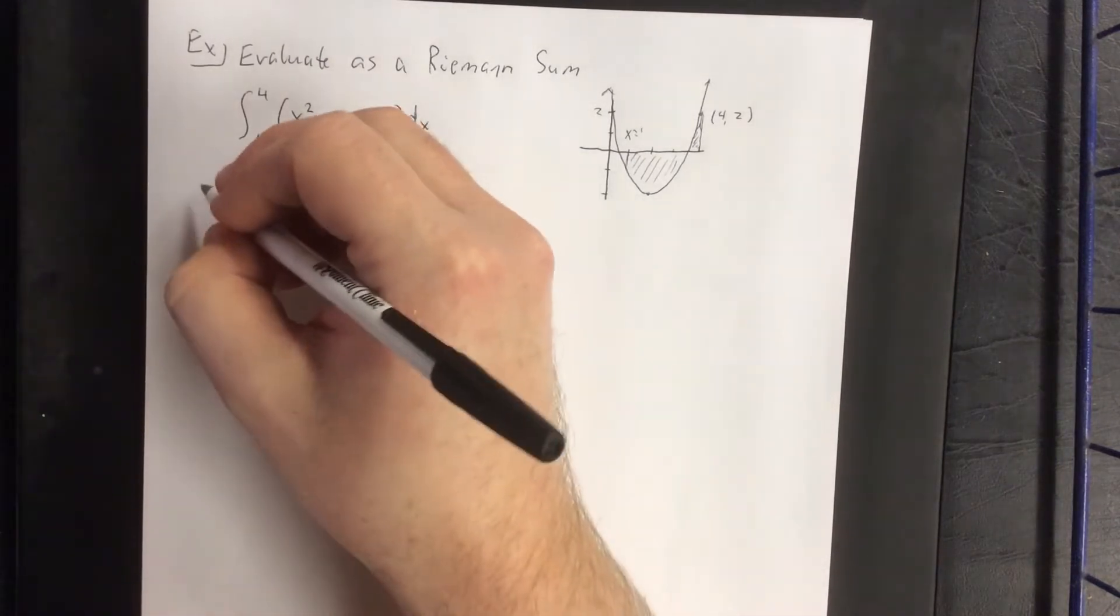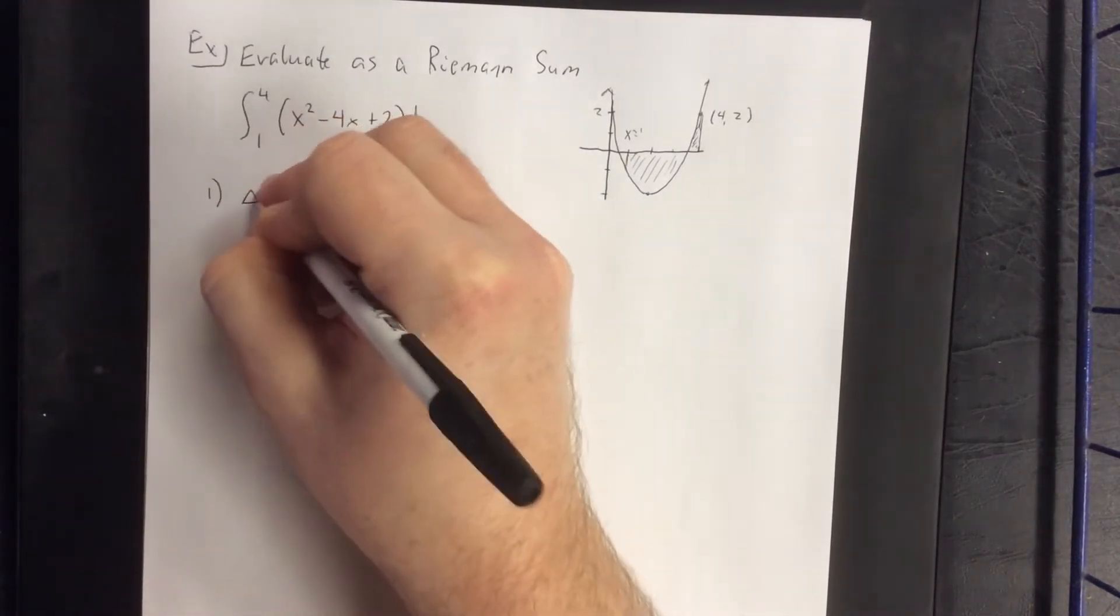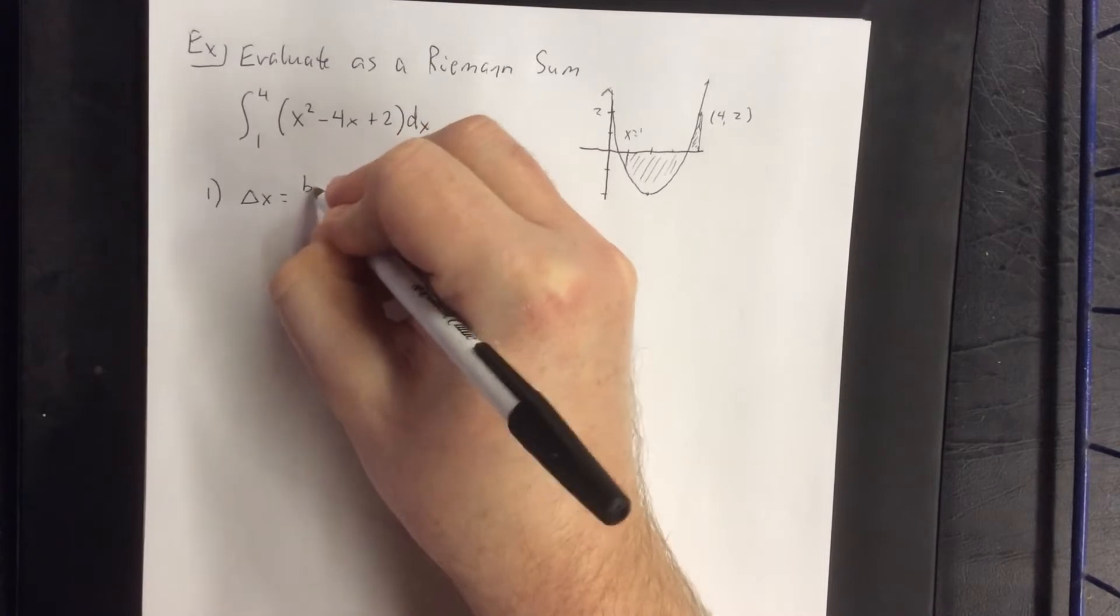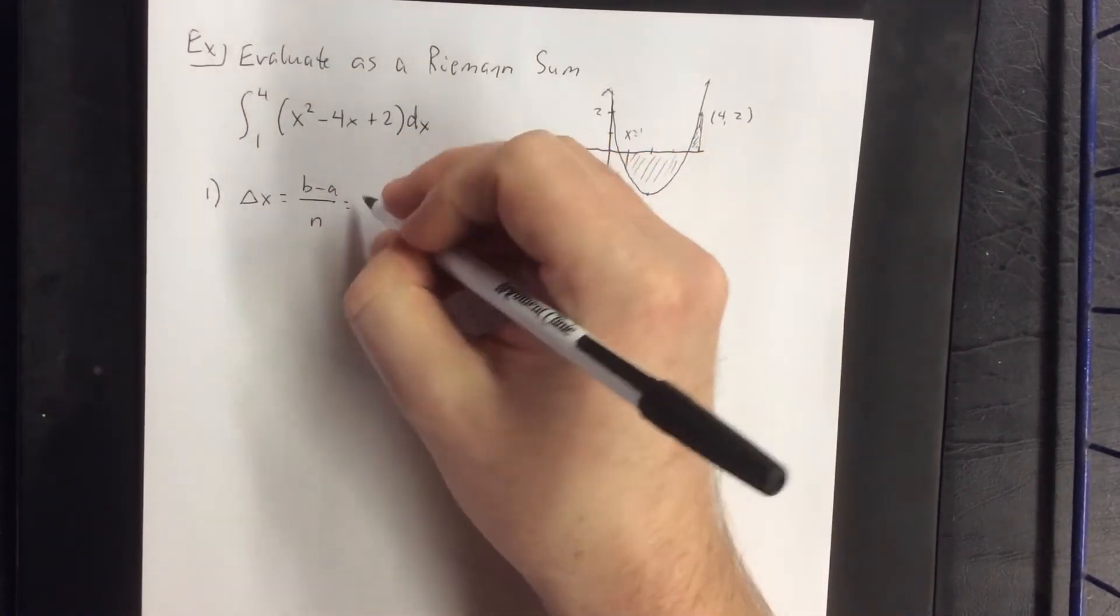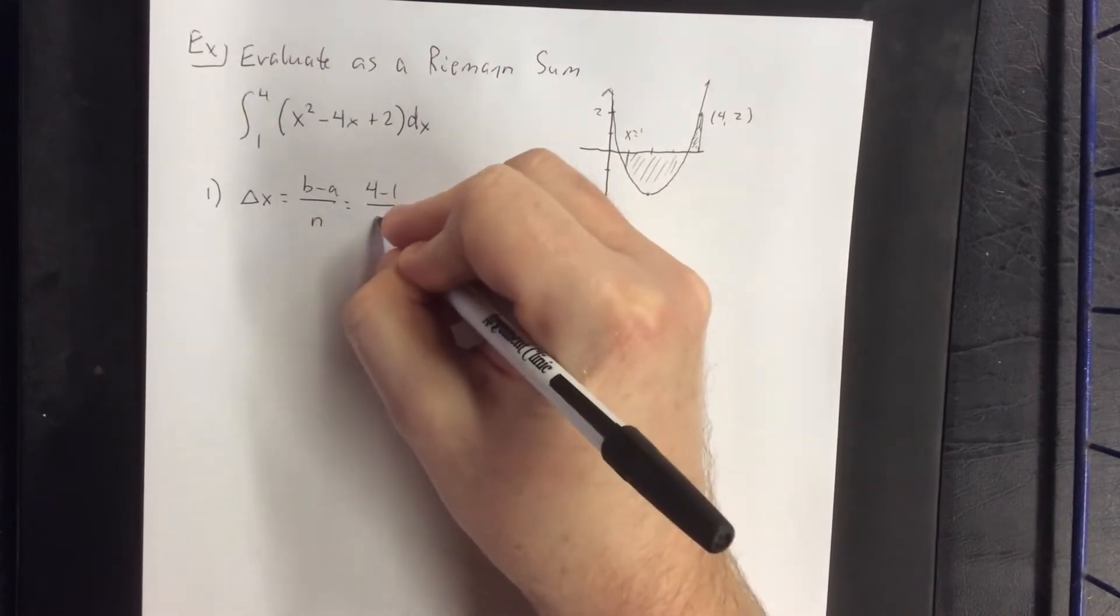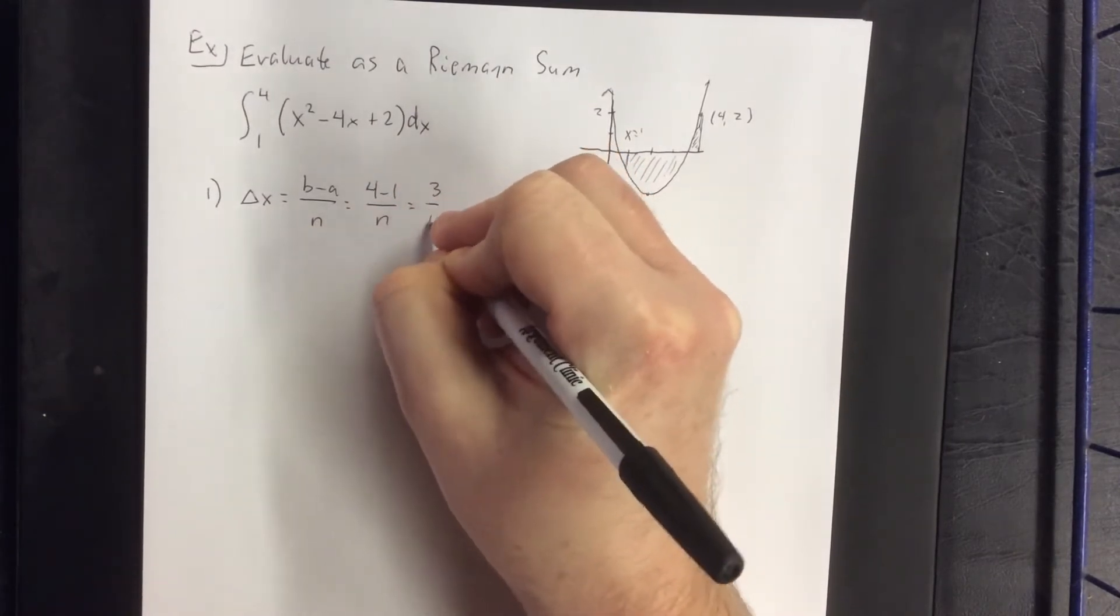So setting this up using our six-step process, first we'll calculate delta x. Delta x is b minus a over n. B and a come from the bounds. That'll be 4 minus 1 over n or simply 3 over n.